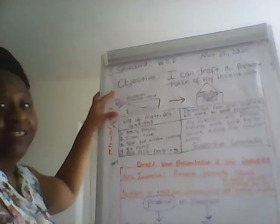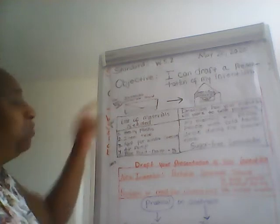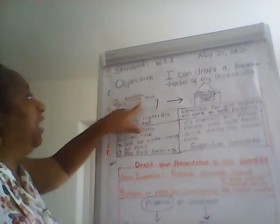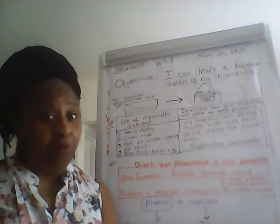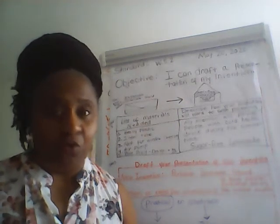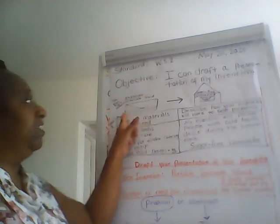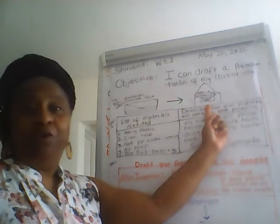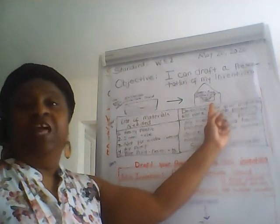Step one: you're going to draw your invention. Here's what my invention looks like. I've drawn an inflatable lemonade stand. My invention is going to be a portable and inflatable lemonade stand. How cool is that? It would look like this when folded, and then it will expand or inflate to look like this.